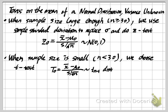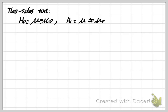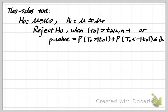We need to decide whether to reject the null hypothesis H₀ or fail to reject it. The first case is a two-sided test. For a two-sided test, when H₀ is μ = μ₀, then H₁ is μ ≠ μ₀. We will reject H₀ when the absolute value of our t₀ is larger than t_{α/2, n−1}. Here alpha is given in the question, and because it is a two-sided test, we use t_{α/2}.